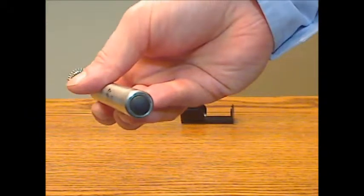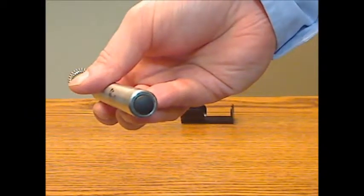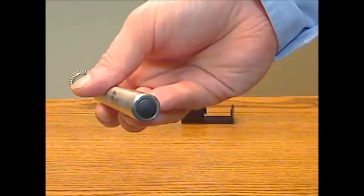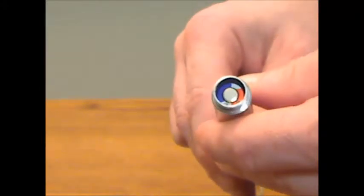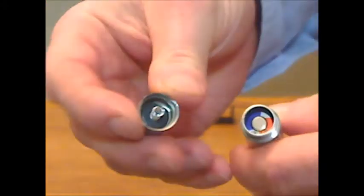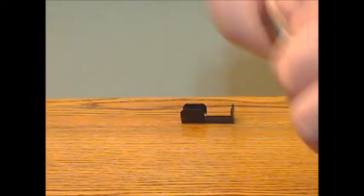It would have been nice if it had two speeds like some do, but relatively minor in that instance. The frother itself takes two AAA batteries that are not included. You just basically unscrew the top here with the button and put the batteries in and put the cap back on and you're good to go.